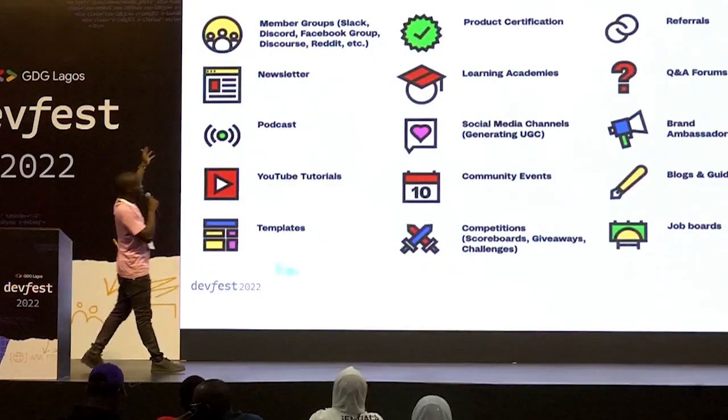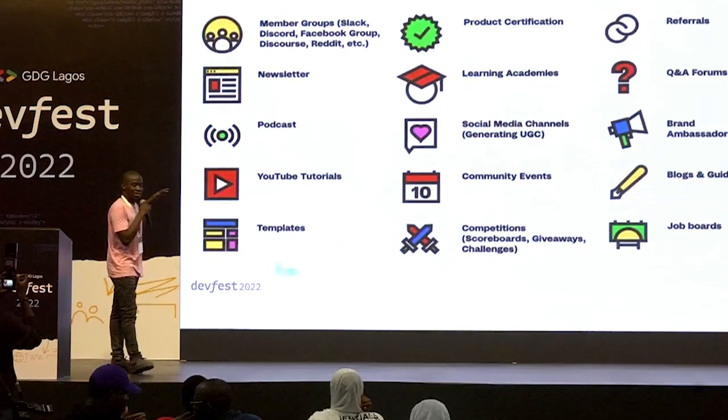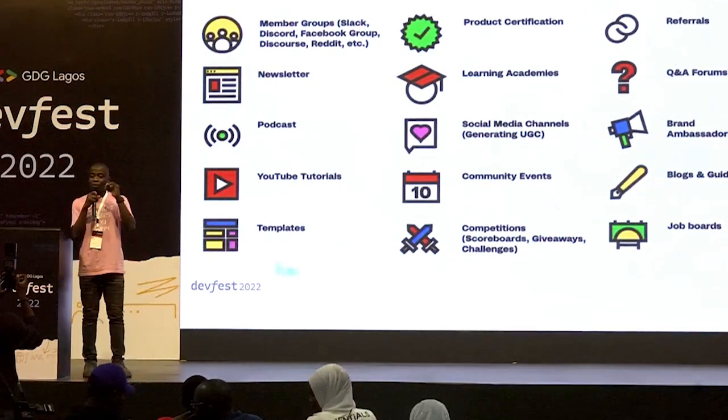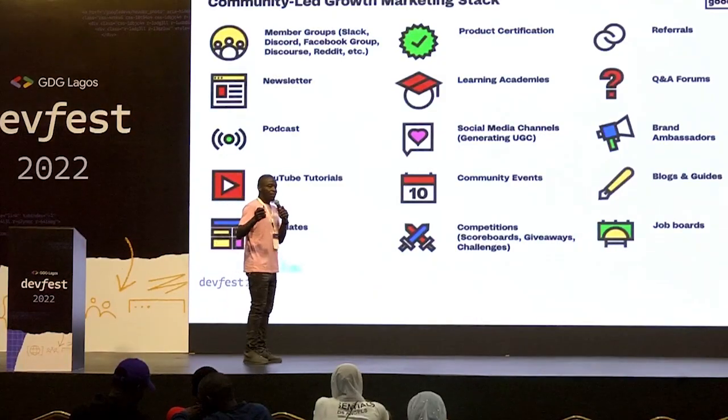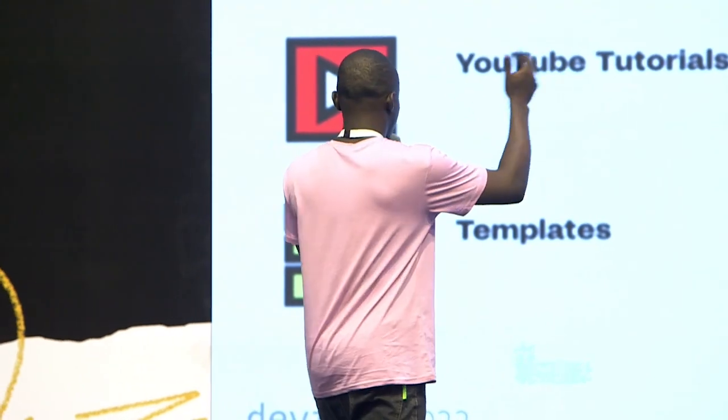Here are some of the community-led growth marketing stack options. You have member groups — you could create member groups for your product or service. You could have newsletters where you keep people and give out value to people for free, letting them know what your brand stands for and how you can better their lives. You could also have podcasts and audio content — have a podcast where you bring on key personalities in your industry, let them talk about different subject matters. By so doing, you are building relationships and getting people to know about your brand. Community events are very important — especially after COVID, human nature now wants to belong to a community, to be seen and be part of something. If you have community events, it will really put you out there.